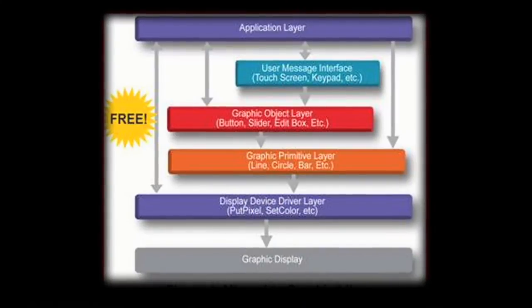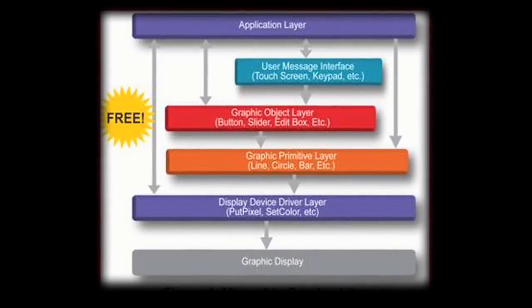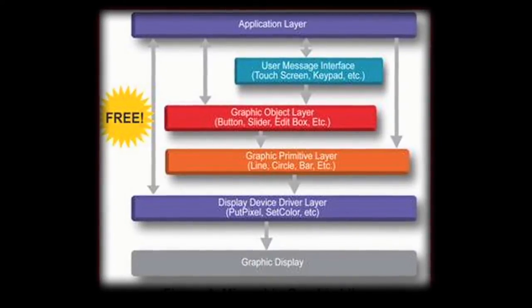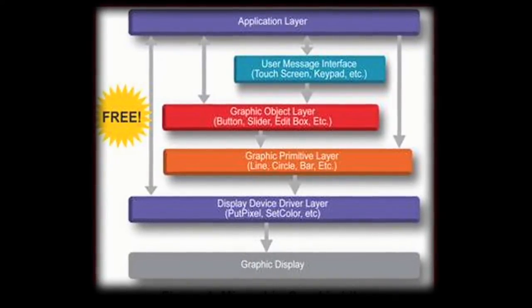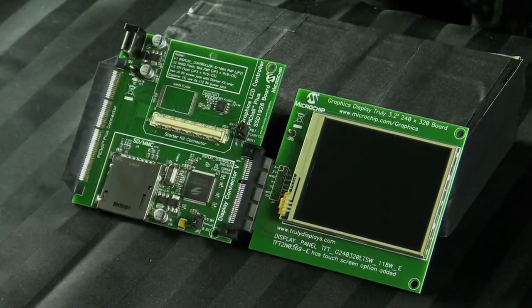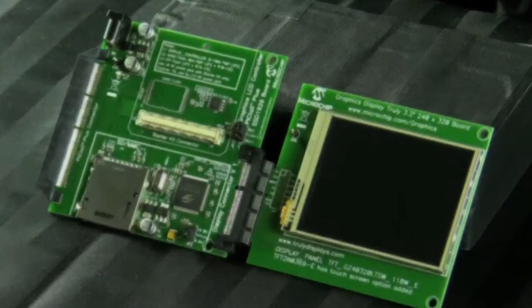The graphics library is highly modular and is optimized for Microchip's 16 and 32-bit microcontrollers. It is free for Microchip customers, easy to use, and has an open documented interface. The library can be found on www.microchip.com/graphics in the software download section.